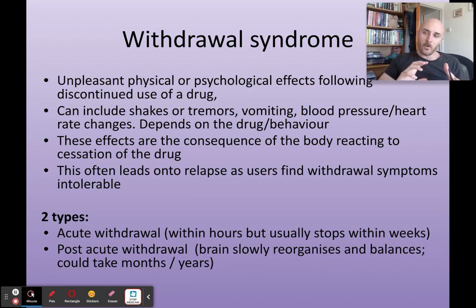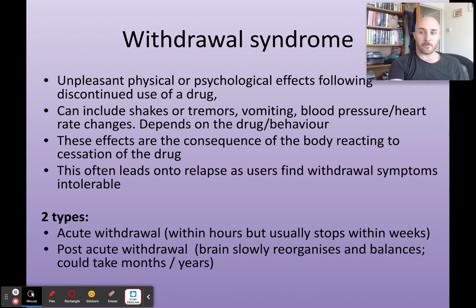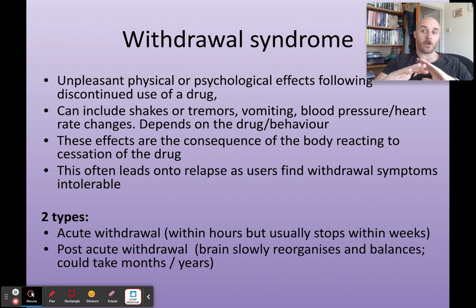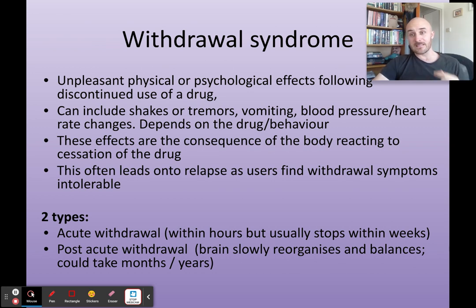If you survive acute withdrawal, you then enter post-acute withdrawal. This is a slow process in which the brain gradually reorganises and rewires itself back to its pre-addiction state. For example, someone who stopped drinking two months ago, attending meetings and seeing a doctor, is through the acute withdrawal phase and is now slowly having to redefine their relationship with alcohol — which means stopping completely. It can take months or even years for the brain to fully rewire itself back to normal functioning.